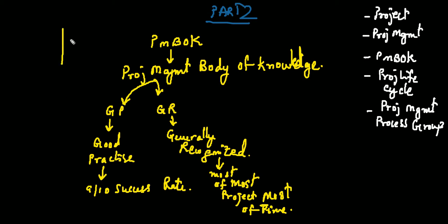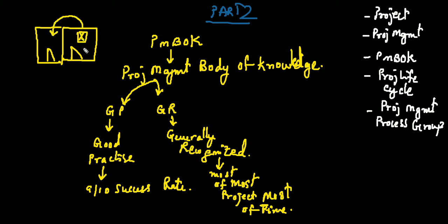Let me give you a simple example. Suppose this is your room and there is another room next to it with a door. The project is: I want to move this table from Room 1 to Room 2. Do you think for this simple project you need all ten knowledge areas in the PMBOK? No — surely not. That's the meaning of 'most projects, most of the time.' Which knowledge areas you use is determined by something called tailoring.